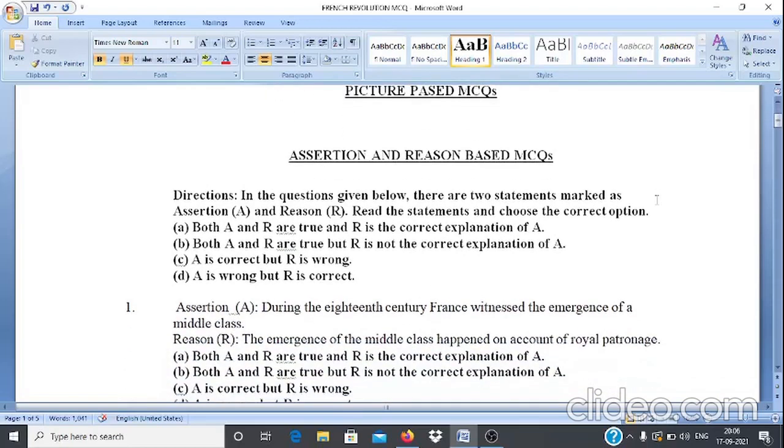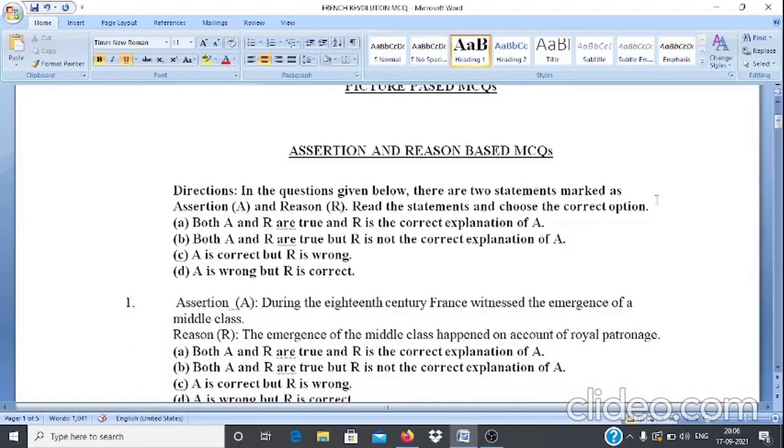In this question, there are two statements marked as assertion A and reason R, and students are supposed to read the statements carefully and choose the correct option. If both assertion and reason are true and reason is the correct explanation of A, then students are supposed to mark option A.